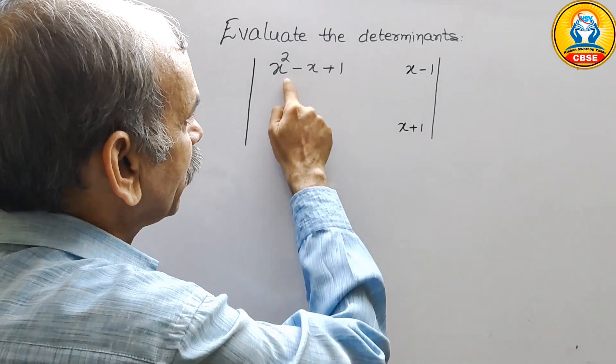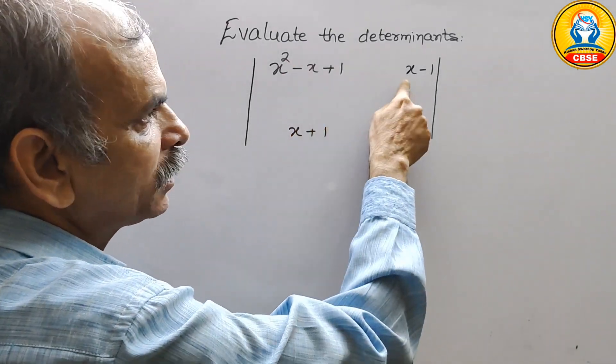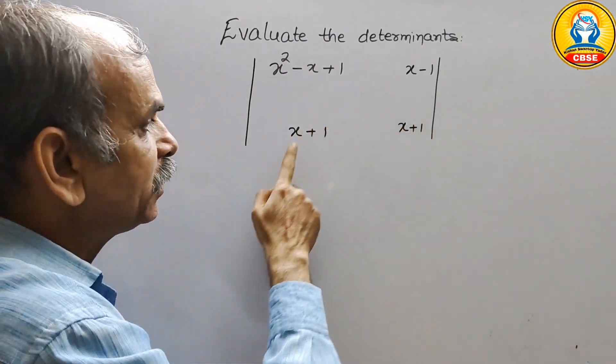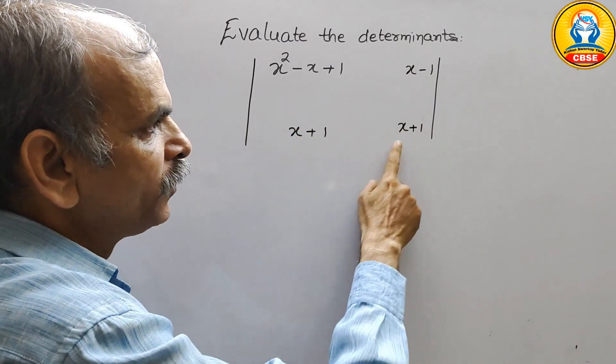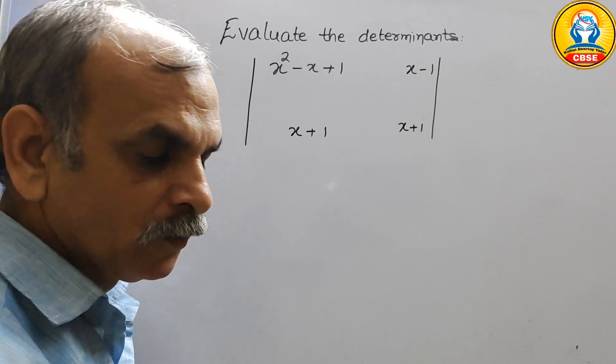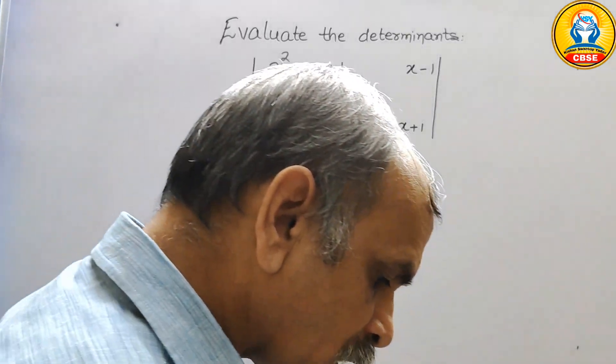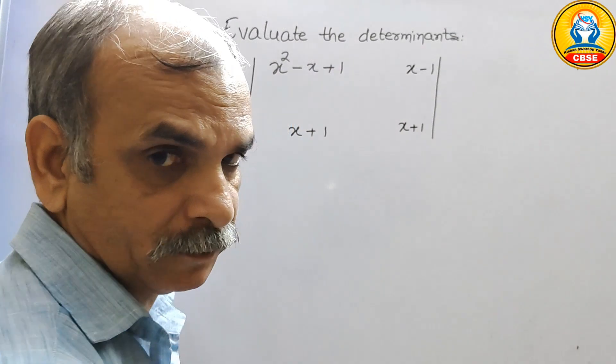See what they have given: x square minus x plus 1, here they have given x minus 1, here they have given x plus, here they have given x plus 1. So they have given 2x plus 1, x plus 1, x plus 1.